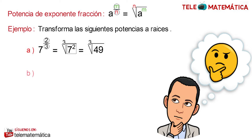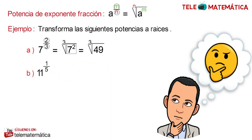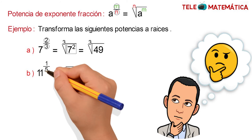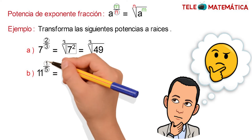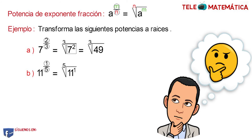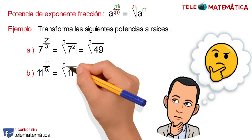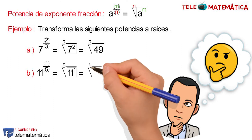Literal B: 11 raised to the fraction 1/5. Applying the property, this would be equal to the root where the denominator 5 becomes the index of the radical and the numerator 1 becomes the exponent. Then solving the power, this would be equal to the 5th root of 11.